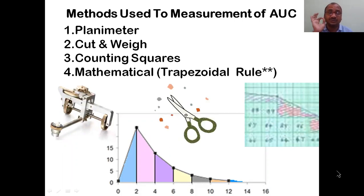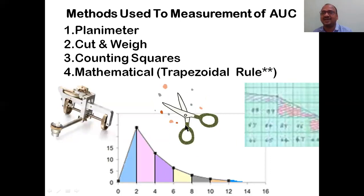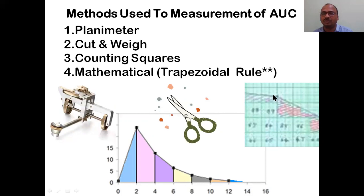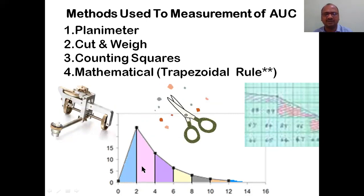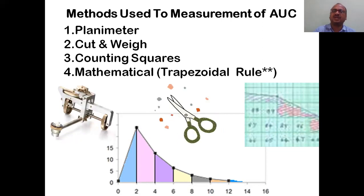In the examination you have to write all four methods with explanation. First heading: planimeter - here I have shown a figure of the planimeter. Second: cut and weight method - we cut the graph. Third: counting squares - in graph paper we count the squares. Fourth: the widely used mathematical model, the trapezoidal rule, where the entire curve is divided into a number of trapezoids.